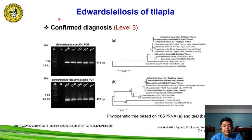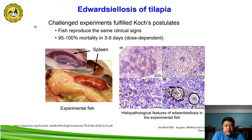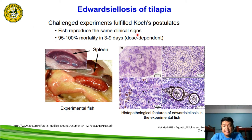More advanced diagnostics include specific PCR and sequencing, considered confirmatory diagnostics. Challenge experiments fulfilled Koch's postulate — fish reproduced the same clinical signs, with 95 to 100% mortality exhibited in 3 to 9 days, and mortality was dose-dependent.